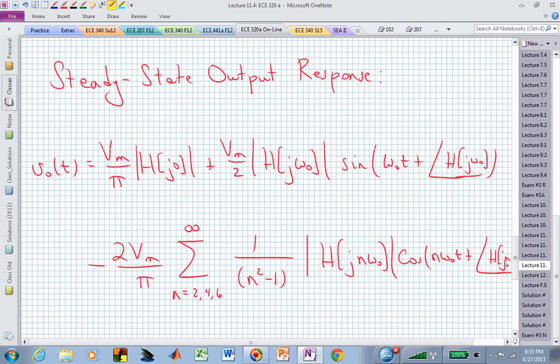And the steady state output response is then just going to be that system transfer function evaluated at the appropriate frequencies. And in particular, we have a DC component. That's going to take the system's transfer function at DC. That's the magnitude of H of J0.